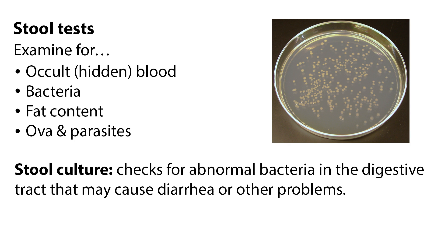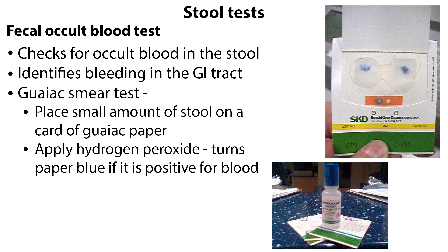Stool can be collected and examined for occult or hidden blood, bacteria, fat content, and ova and parasites. The stool culture checks for abnormal bacteria in the digestive tract that may cause diarrhea or other problems. The fecal occult blood test checks for occult blood in the stool that is useful in identifying bleeding in the GI tract.